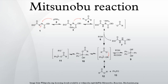The Mitsunabu reaction is an organic reaction that converts an alcohol into a variety of functional groups, such as an ester, using triphenylphosphine and an azodicarboxylate such as diethylazodicarboxylate (DEAD) or diisopropyl azodicarboxylate. The alcohol undergoes an inversion of stereochemistry. It was discovered by Oyo Mitsunabu, and several reviews have been published.